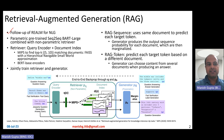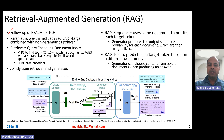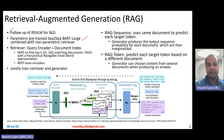RAG also combines a parametric pre-trained model with a non-parametric retriever. However, in this case the parametric pre-trained model is a sequence-to-sequence BART large model, and the non-parametric retriever is basically a BERT model — BERT-based encoders.